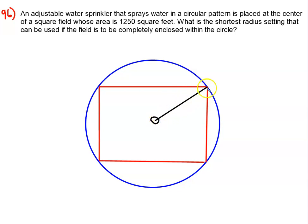The sprinkler will continue to cover this circular area, but the field that we're trying to water is a square. It's a square whose area is 1250 square feet, so that's the red. The question that we're supposed to answer is: what is the shortest radius setting that can be used if the field is to be completely enclosed?